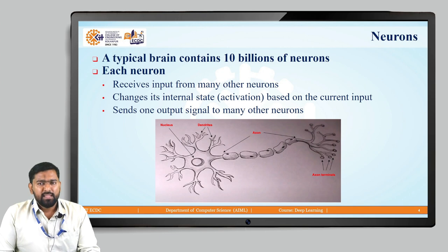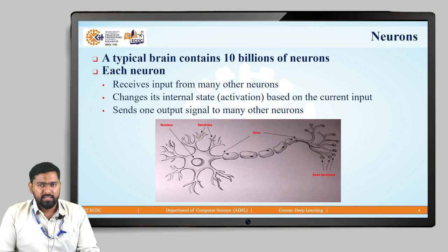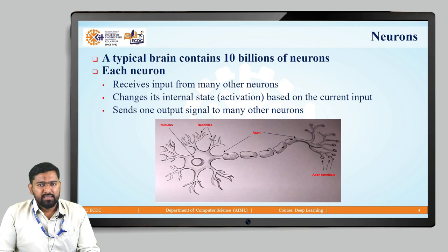We can see this is an example of a neuron in a brain. In our brain, we have billions of neurons — more than 10 billion neurons in particular. The job of each neuron is to receive input from many other neurons, and it will change its internal state, what we call activation. Then that output will be passed to other neurons.